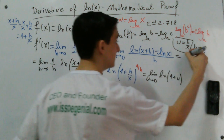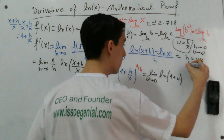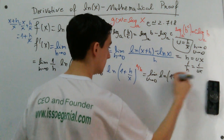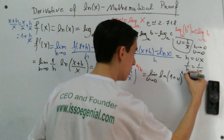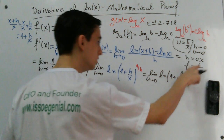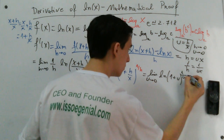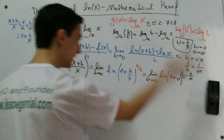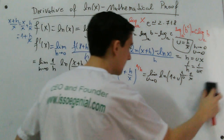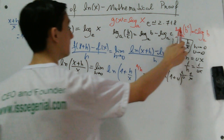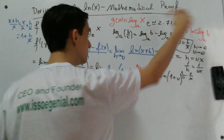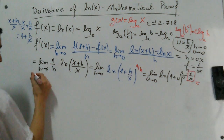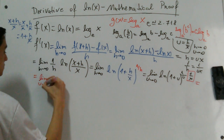Multiplying both sides of u = h/x by x, we have h equals u times x. So 1 over h equals 1 over u times x. Instead of writing 1 over u times x, let's put it as 1 over u times 1 over x, which is the same but more useful for the next step. We then apply the exponent property just for the 1 over x part, so we have the limit when u approaches 0 of 1 over x times natural log of 1 plus u raised to the power 1 over u.